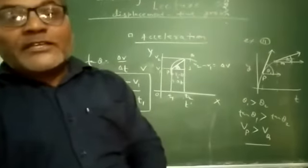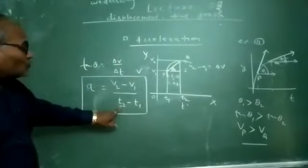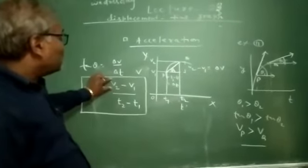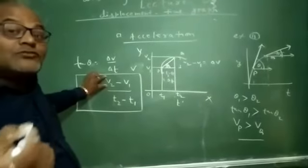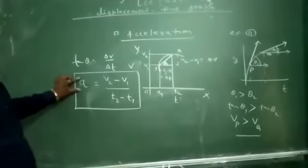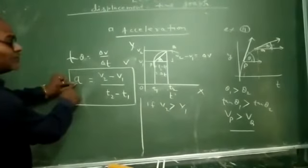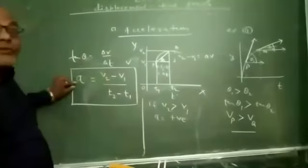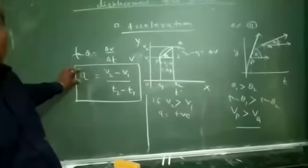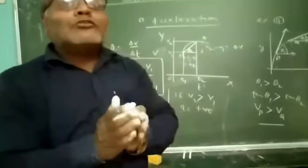Time can never be negative because time is always positive, so T2 is always greater than T1. But there are three cases: V2 can be greater than V1, V2 can be less than V1, or V2 can equal V1 — and in each case, the acceleration of a body will change. If V2 is greater than V1, then acceleration will be positive, meaning the motion of the body goes on increasing in order.